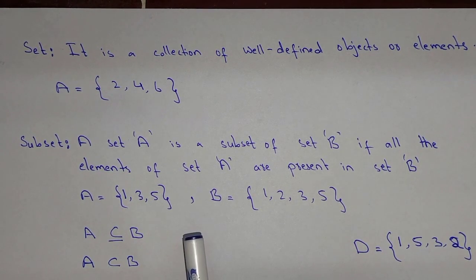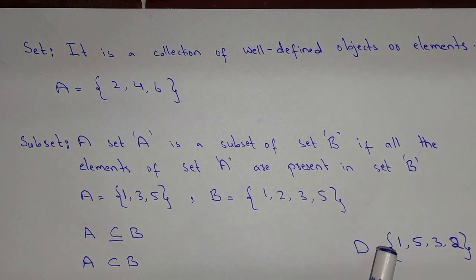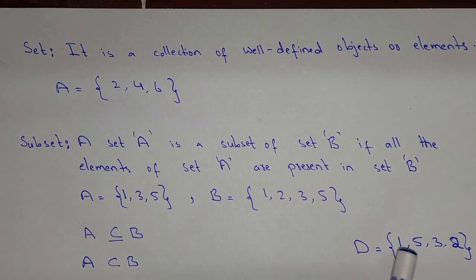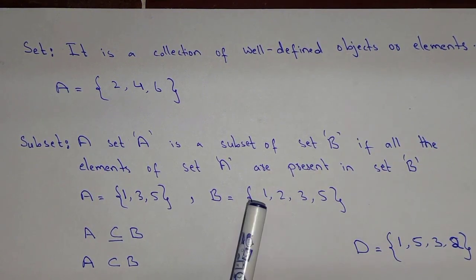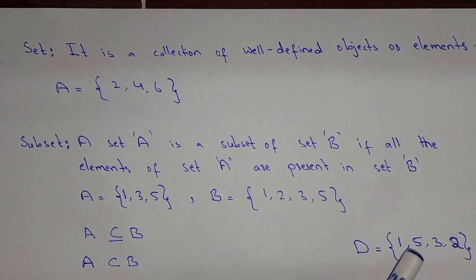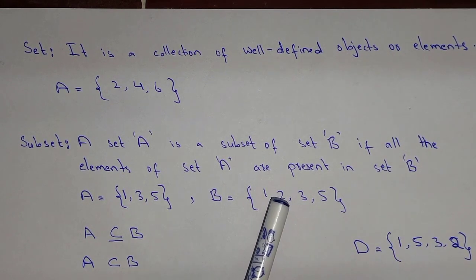Now we come to the improper subset. Here we have set D that has the elements 1, 5, 3, and 2. Now all the elements of set D are present in set B, so we can say that D is the improper subset of set B.